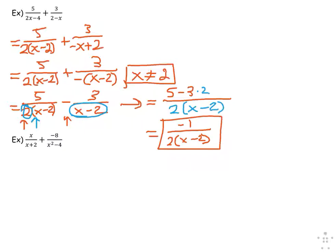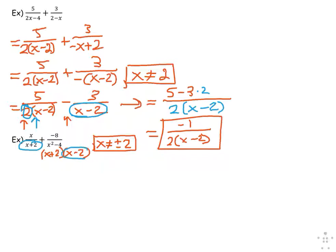For the next problem, we factor the second denominator — it's a difference of squares. We exclude, box that for safekeeping, and then realize that the LCD is x plus 2 (they have that in common, so select it once) and x minus 2.